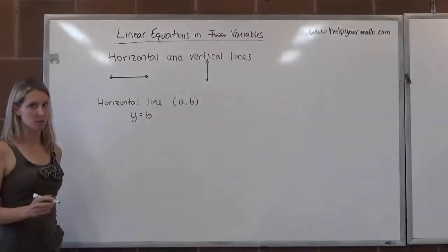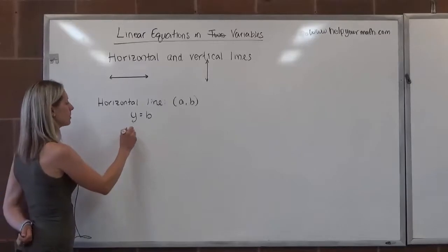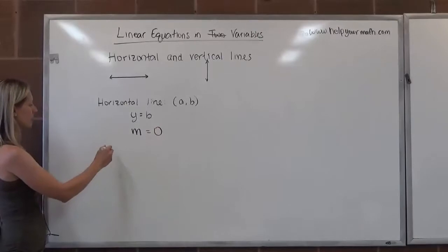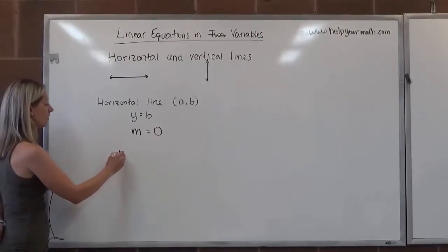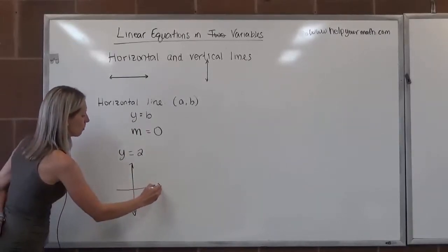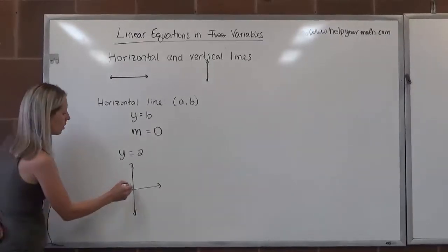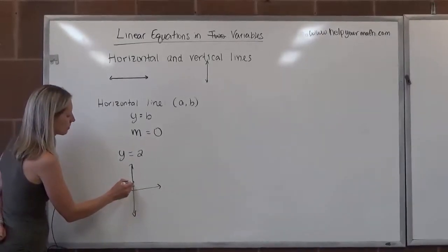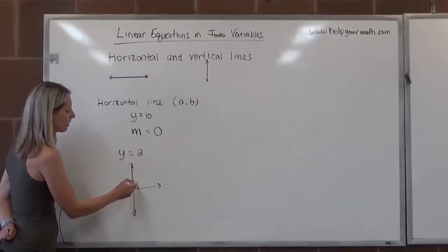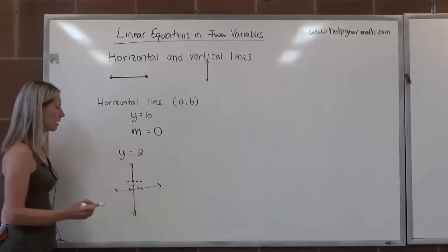A horizontal line is given by y equals b. Something interesting about horizontal lines is that they all have the same slope — the slope of any horizontal line is zero. We can verify this with the equation y equals 2. If we graph this line, we're looking for where in the coordinate plane y equals 2. That's at (0, 2), which is the y-intercept, and also at (1, 2) and (2, 2) and (–1, 2).